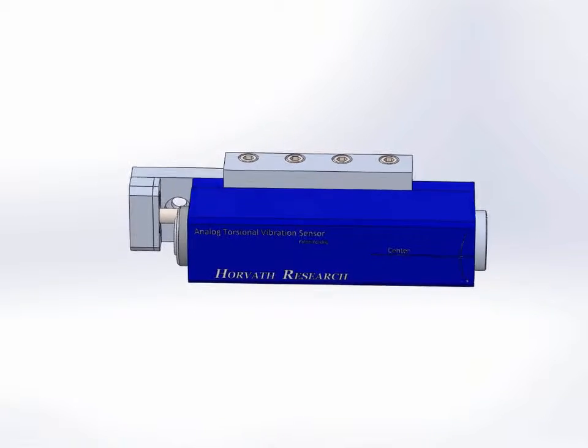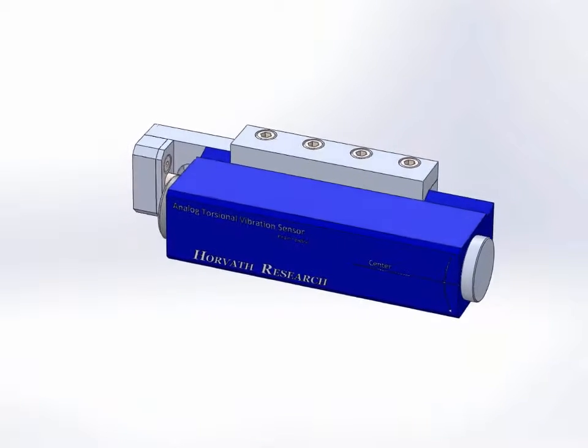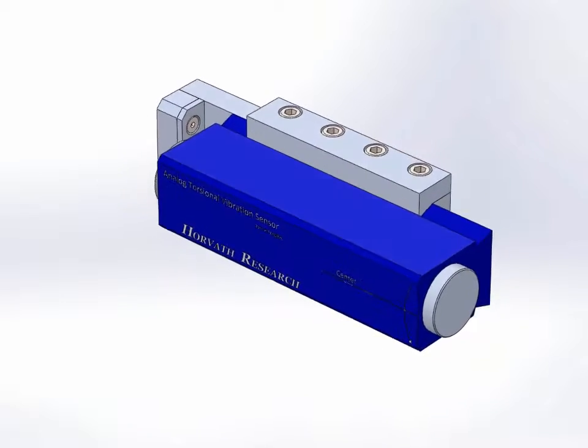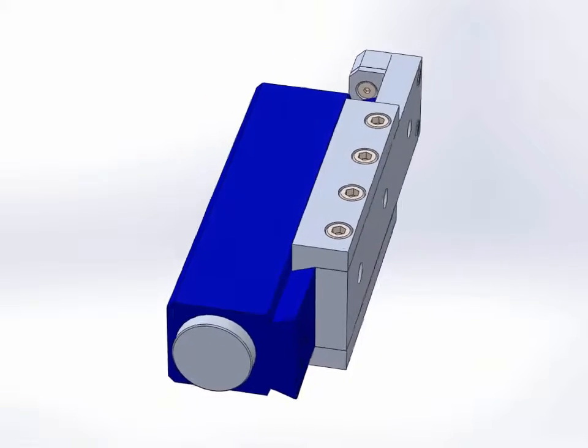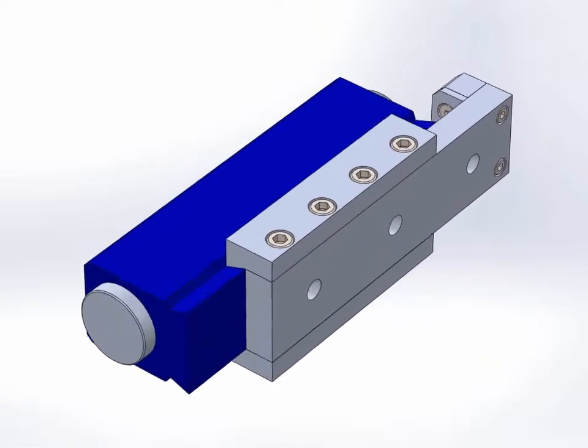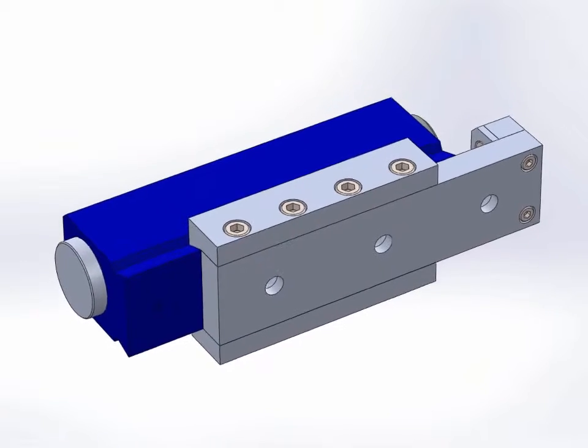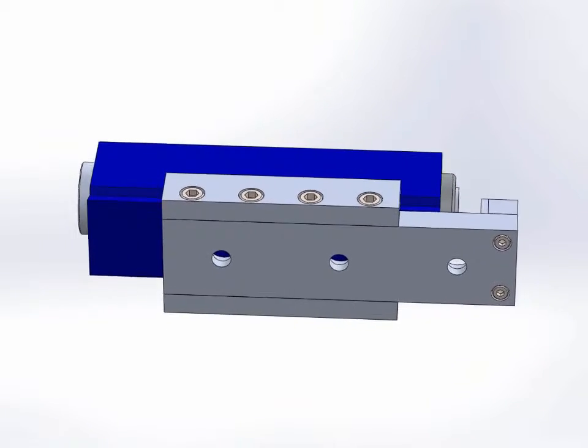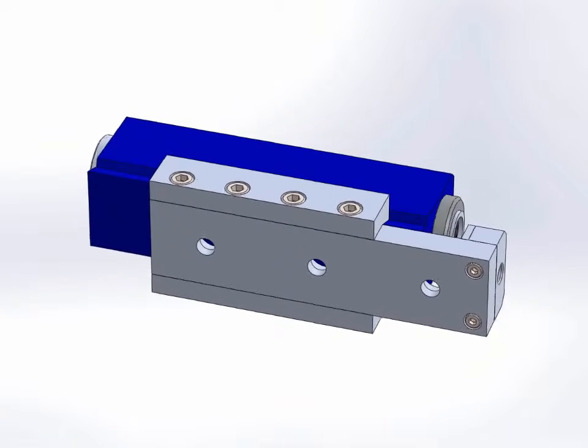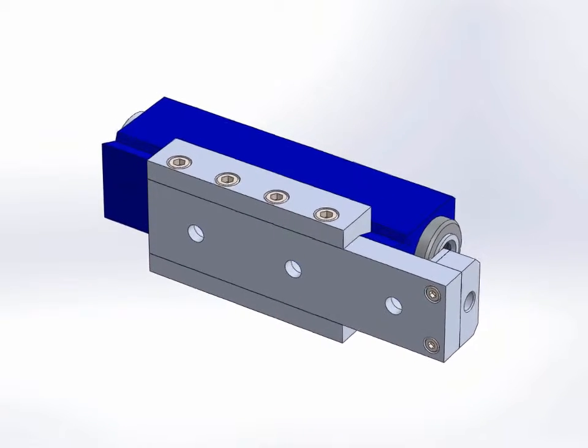The analog torsional vibration sensor was developed to address the industry's need for an analog sensor that provides reliable data to identify torsional vibration without the installation of encoders, slip rings, and telemetry. ATV-S is a contactless sensor. Similarly to radial vibration probes such as proximity probes, a small section of exposed shaft surface can provide sufficient target area to measure torsional vibration.